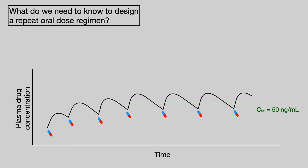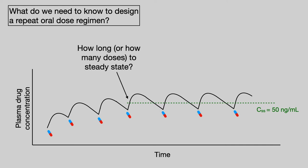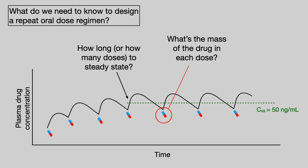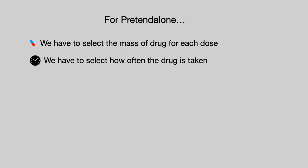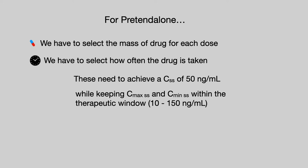In a similar manner to intravenous infusion, it will take a certain time for the drug concentration to build up to the steady state concentration, and we need to know how many doses it takes to reach that. We then need to know what mass of drug is given in each dose, and how often — the dosing interval, depicted by tau. For Pretendalone, we have to select the dose mass and dosing frequency to achieve a steady state of 50 nanograms per ml, while keeping C-max and C-min within the therapeutic window.